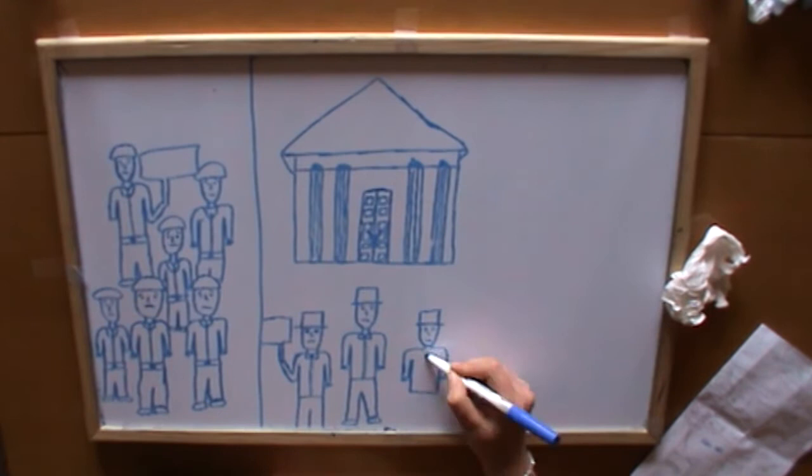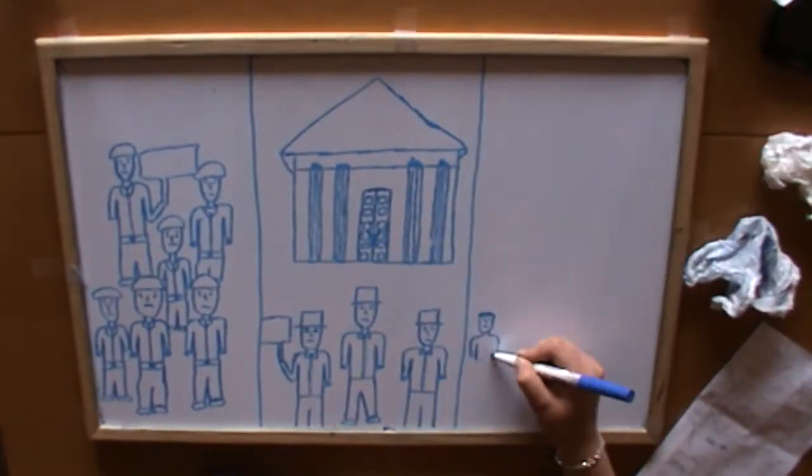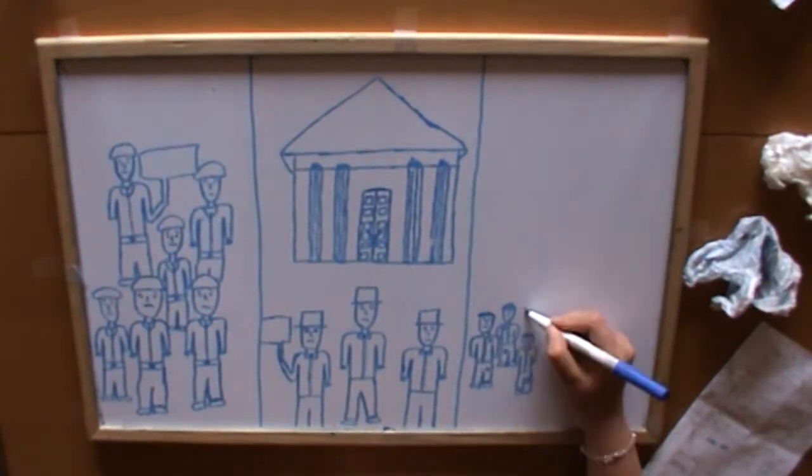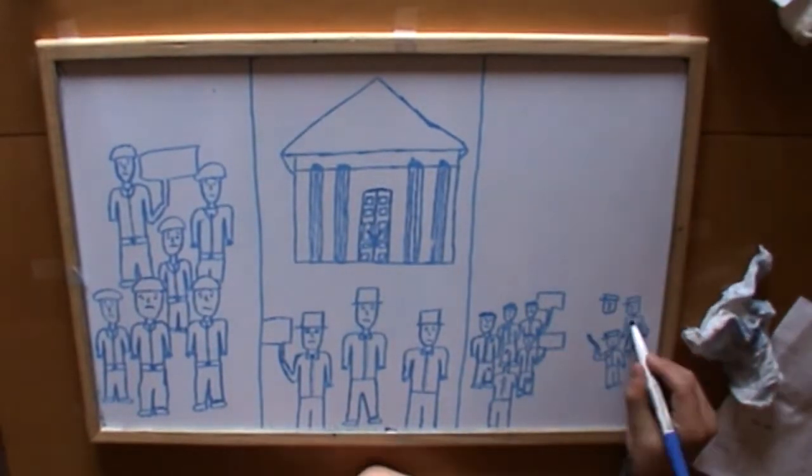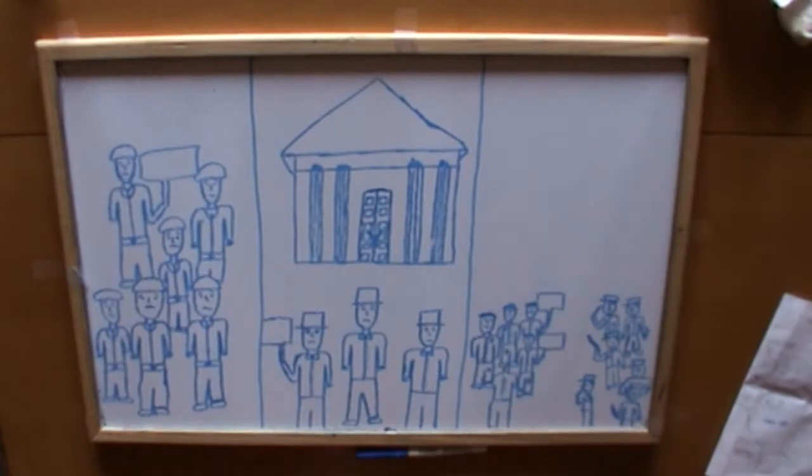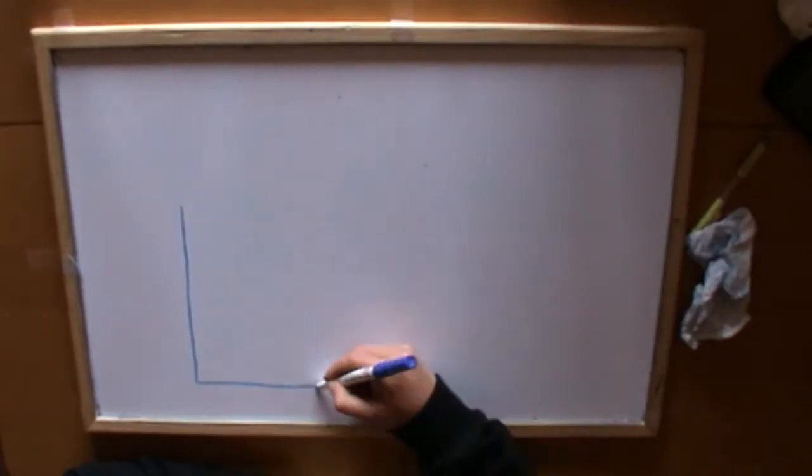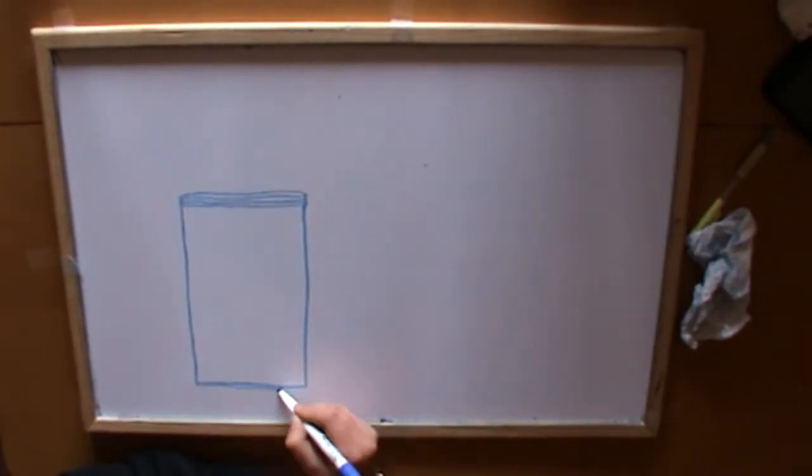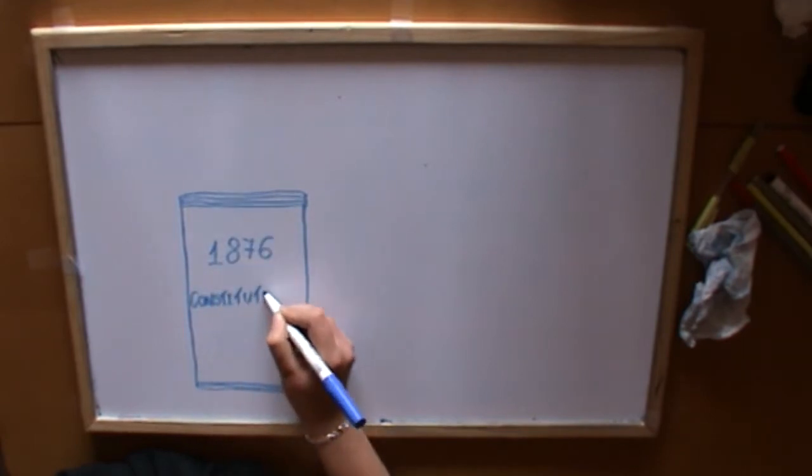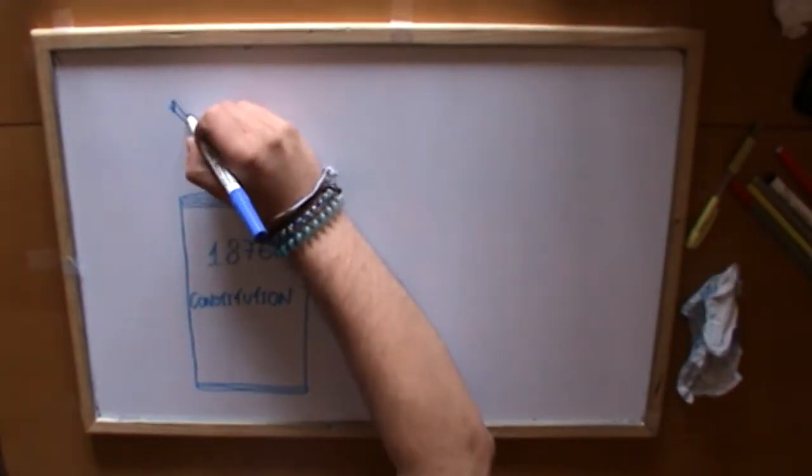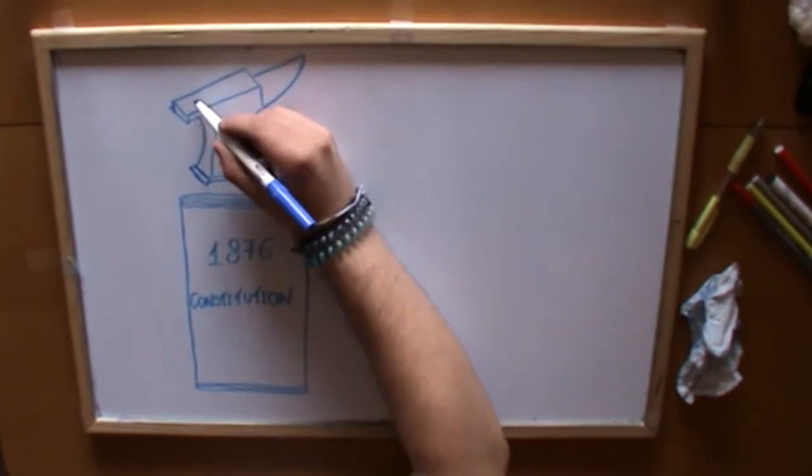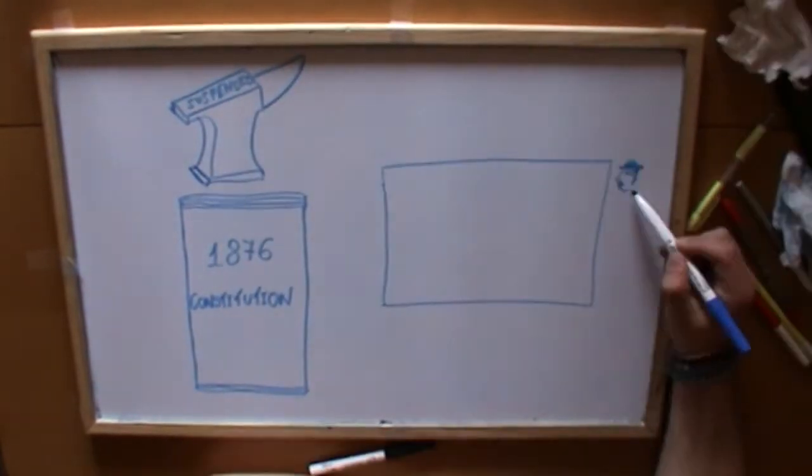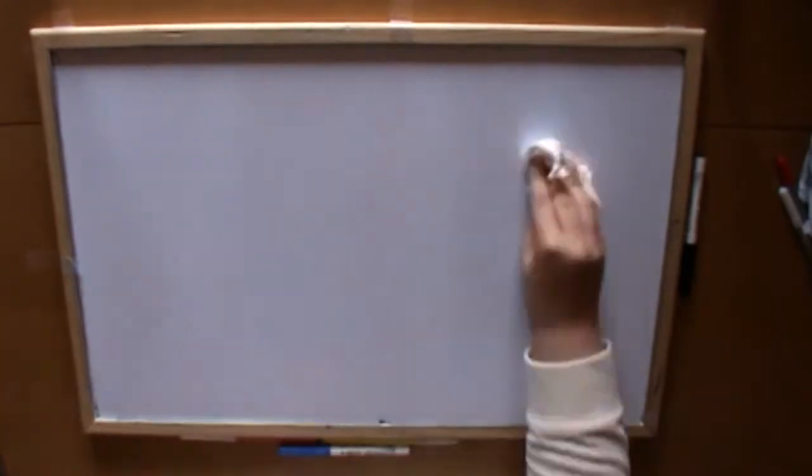The CNT and the UGT, a socialist union, called for a general strike, but the government dissolved it by using force. The government controlled the situation, but instability became constant. Governments didn't last much. The dynastic turn was definitely broken. The constitution was constantly suspended, and concentration governments were formed.